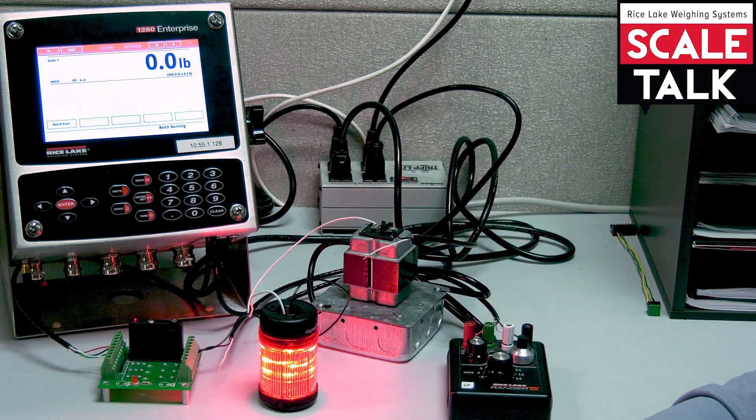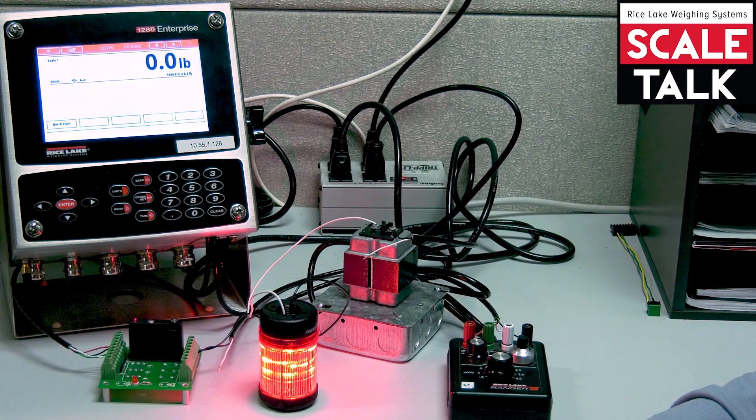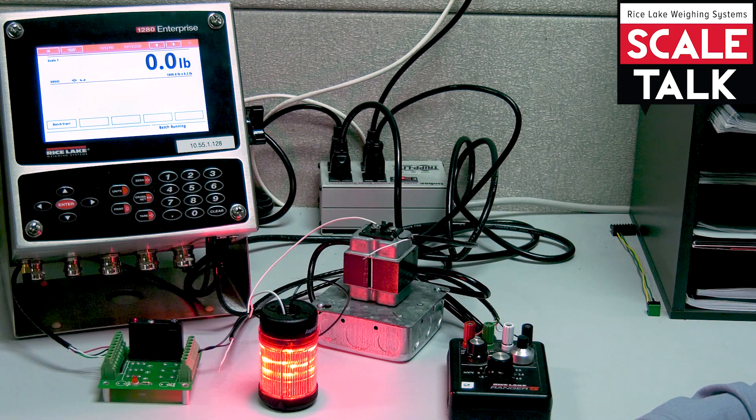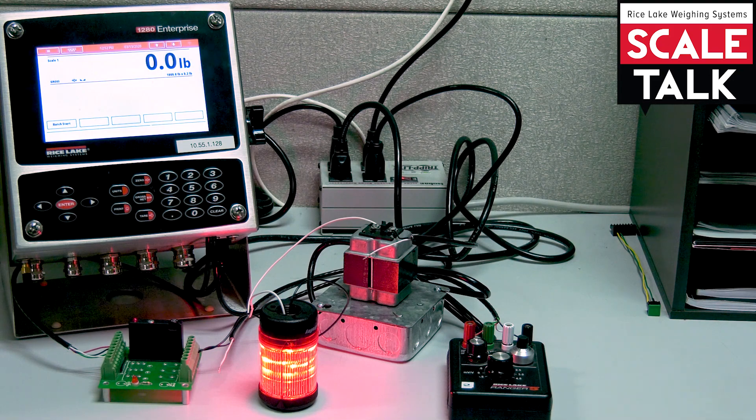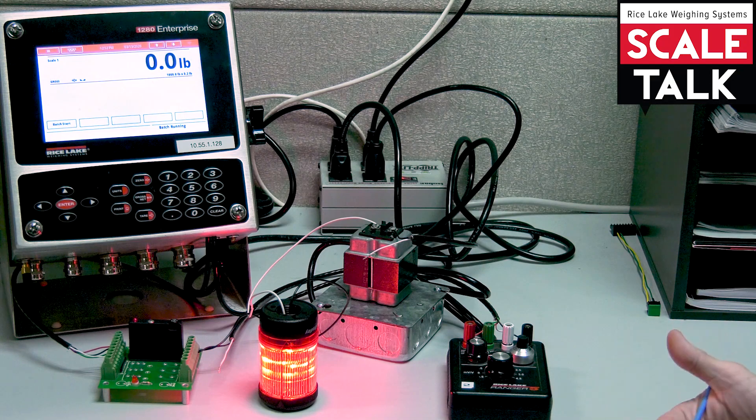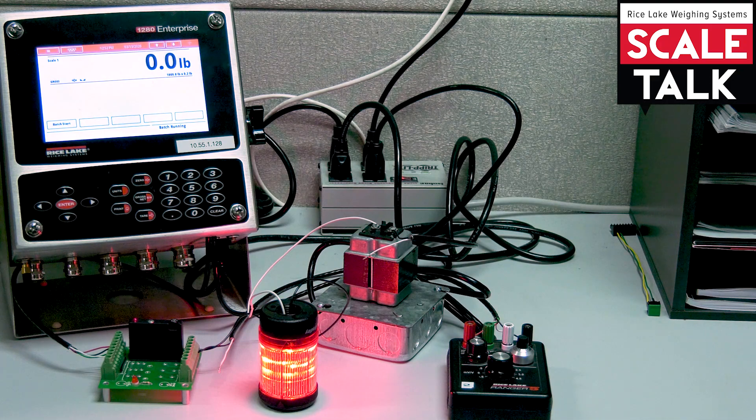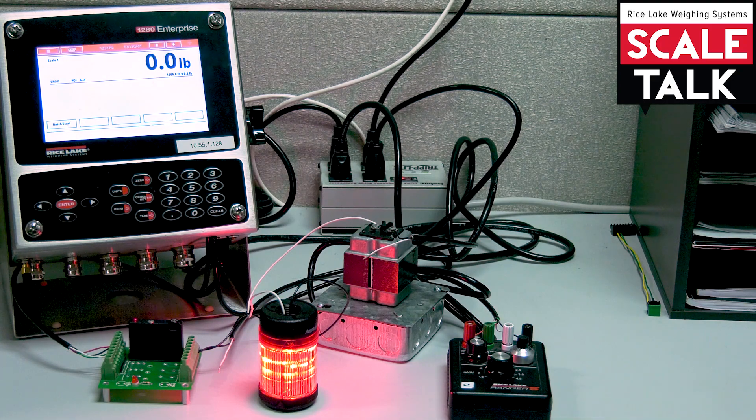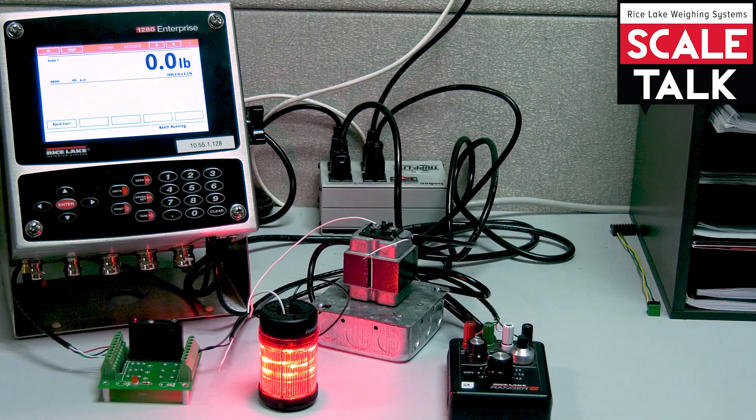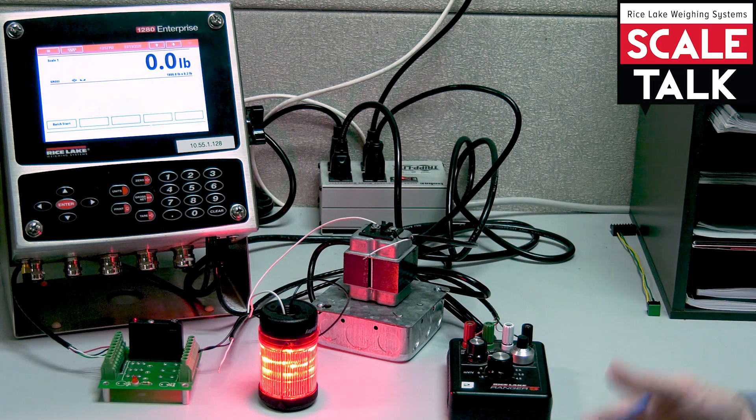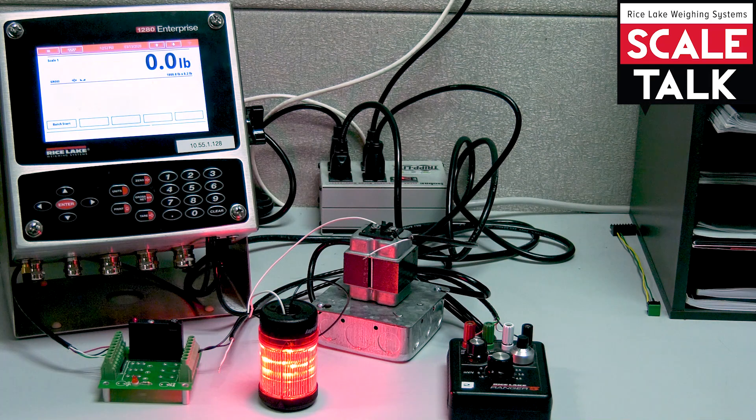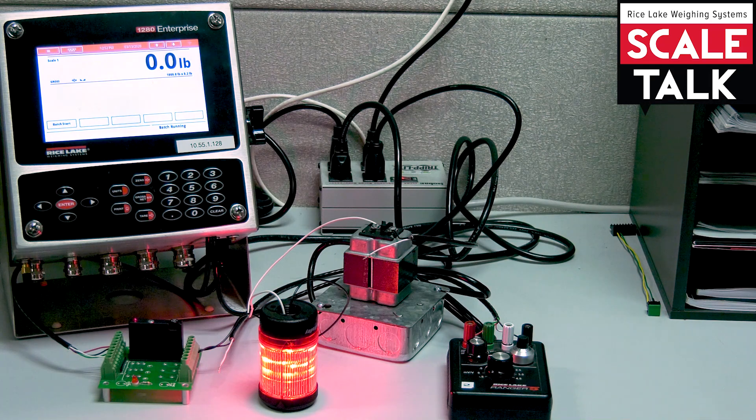Now you notice that the light came on right away. This is another very important difference between batching set points and free running set points. With a free running set point it was told to trip higher, so it didn't come on until we tripped higher and then it turned off when we were below. But as part of a batch routine, we're expecting that there's some kind of equipment like a valve or a chute that we want to open up and dispense some kind of product into a container. That's typically how this goes.